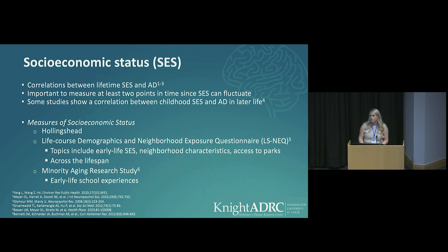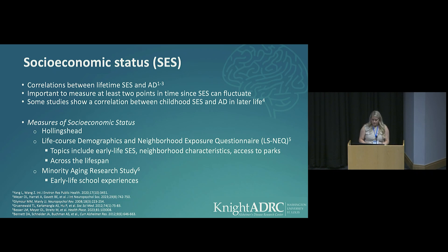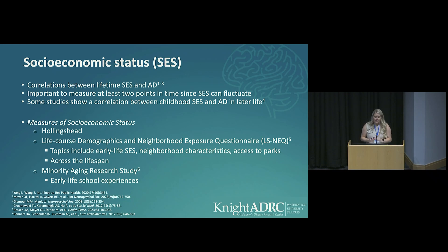We already collected participant occupational information via the Hollingshead Index, which is fine, but it's not comprehensive, nor does it account for fluctuations in SES across the lifespan. So it was about this time when we learned of a measure from Dr. Lila Besser — she was testing the LifeCourse Socioeconomic Neighborhood Exposures Questionnaire, which looks at not only socioeconomic status across the lifespan, but also other characteristics such as green space and neighborhood characteristics. Our colleagues at the Rush ADC had already been collecting education information, especially early life education information, in their Minority Aging Research Study, so we adopted a few questions from that protocol as well.